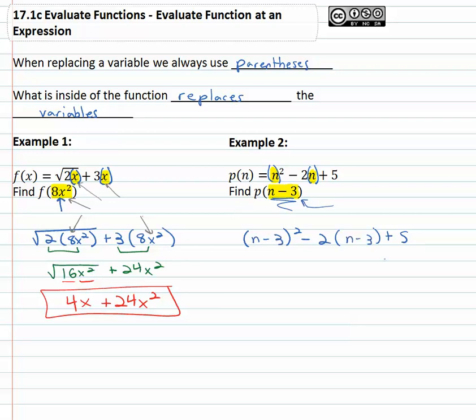So we have n minus 3 squared minus 2 times n minus 3 plus 5. Now we just have to simplify this expression. Be careful when squaring, remember we square the first and then we have the product negative negative 3n twice, negative 3n is negative 6n and then we can square the last term, 3 squared is 9.